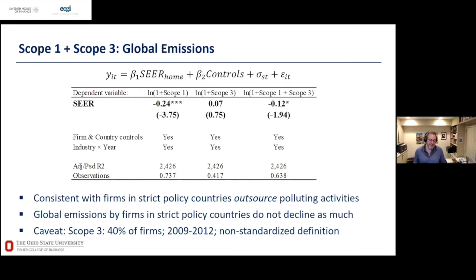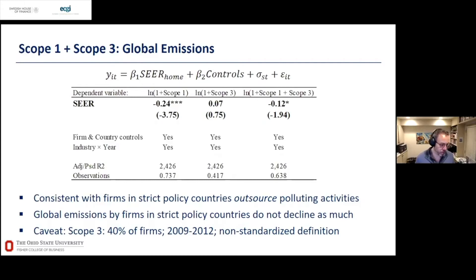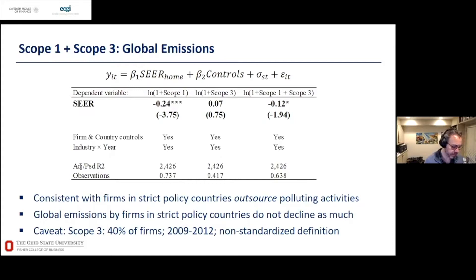We also try to understand what happens across scope 1, 2, and 3. Scope 1 is directly under the firm's control. Scope 2 is a more direct input — electricity. Scope 3 covers your suppliers, business travel, and more remote activities — somebody else is polluting, and even if your home country has strict environmental policy, it won't necessarily apply to your supplier in another country. So the question is: do firms in strict-policy countries outsource more of their polluting activities?